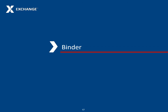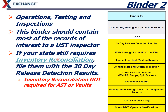When I talk about binders, you should have three binders on site. These 30-day release detection results — you should print one every month, or every 30 days, and put it in this binder underneath the tab that says 30-day release detection results. You'll print the environmental compliance report and the inventory control report, and put those both behind this tab, and that's all you need to do.